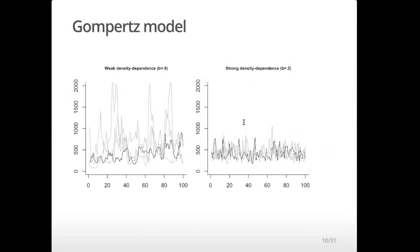If we take the log, you can see it looks like a density-dependent population process you might see in a textbook. This would be weak density dependence — it's fluctuating about some level but might go up or down quite a bit. These are all simulated from the same Gompertz equation. You can see it's quite flexible — it can produce a lot of different trajectories just by chance. And as we decrease that B term — which in the context of a Gompertz density-dependence model is the strength of density dependence — you can see it becomes quite a bit tighter.